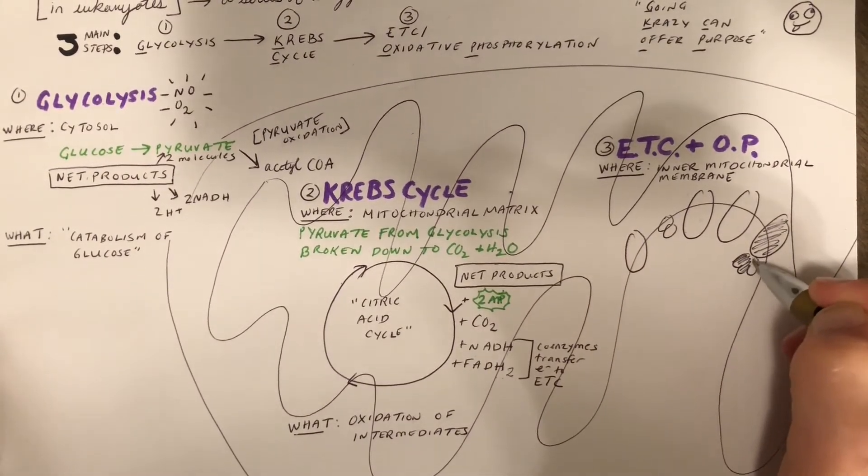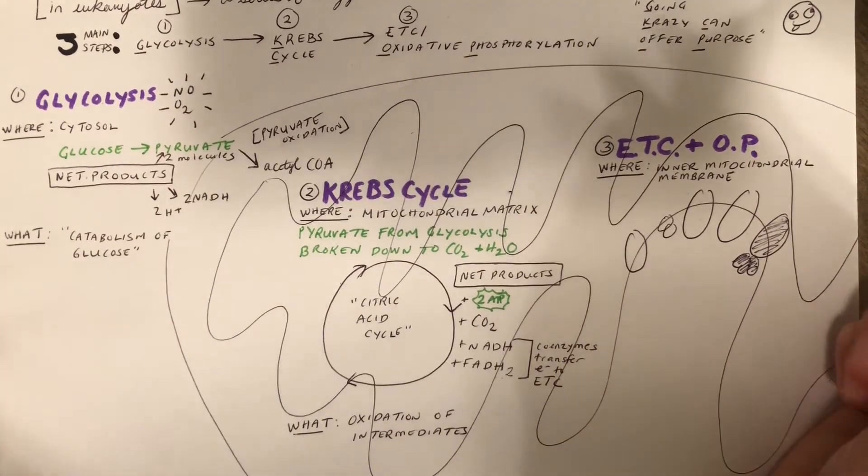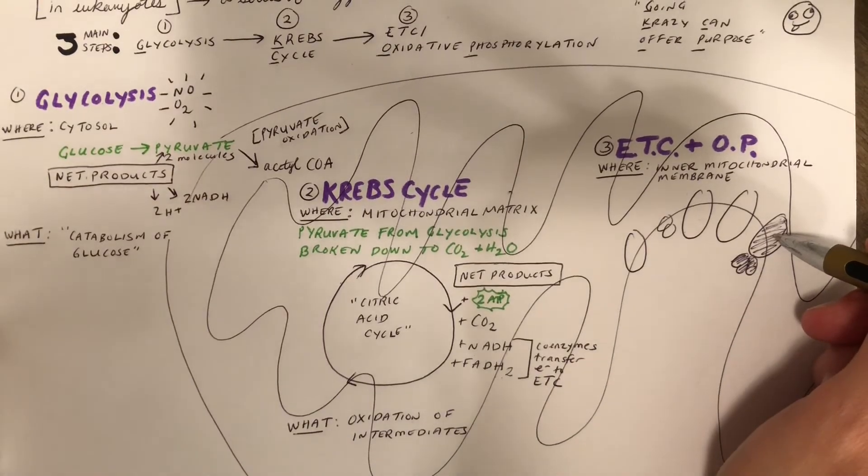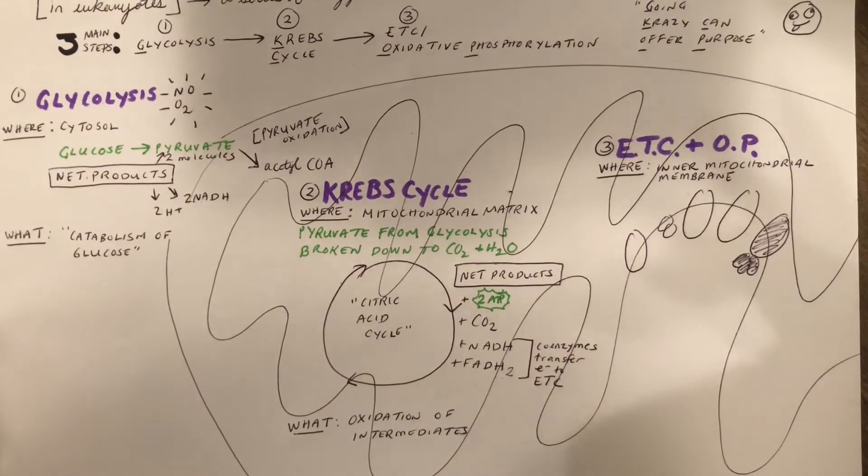Now, there are several important enzymes that are going to be along this membrane, but the only one you need to know about and that you need to know the name of is ATP synthase. This is a proton pump, and it's going to help create ATP. Hence, synthase, ATP synthase.